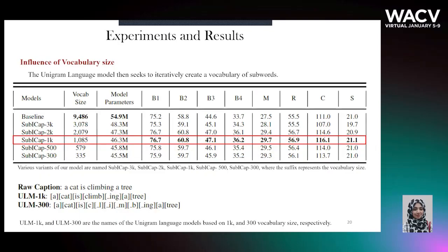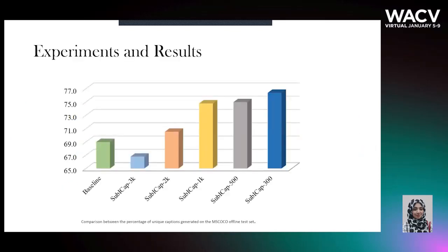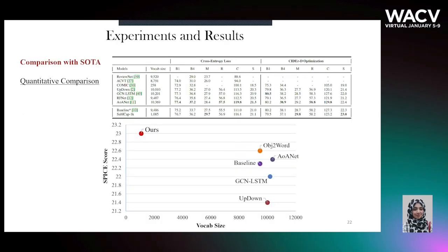In this table, we show the results of our model and baseline on the MS-COCO test set, and it can be seen that our proposed model SubICAP, which uses a thousand words in the vocabulary, outperforms the baseline on all metric scores. Our model also generates more unique captions compared to the baseline. We also compare the performance of our model with state-of-the-art methods, and our model achieves the highest SPY score compared to other state-of-the-art methods, which are trained on a vocabulary size eight to ten times higher than our model.